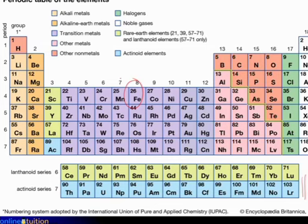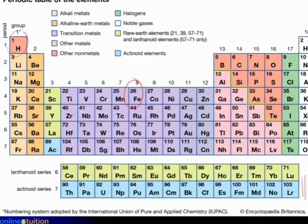My teacher told me many years ago: learn the first 20 elements of the periodic table. Start with hydrogen at the top, go down — lithium, sodium, potassium, all the way to cesium and francium, then beryllium, all the way to calcium, which is the 20th element. Learn everything about those. Most school chemistry is based on the first 20 elements.